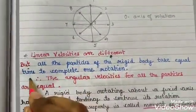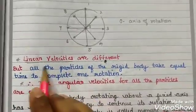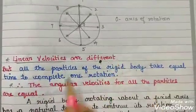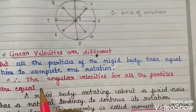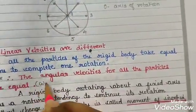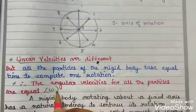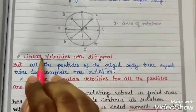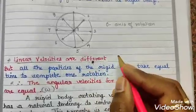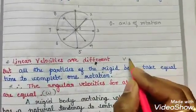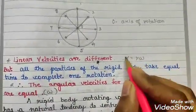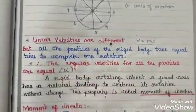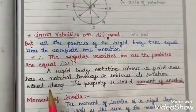The key concept: angular velocity omega is the same for all particles, whereas linear velocity v is equal to r times omega - so linear velocity is different for different particles depending on their radius r.